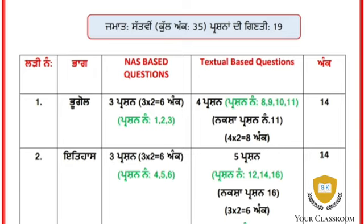Because the school is not open, you should note the paper pattern and structure. For Class 7, the total marks are 35, total questions are 19, and total marks of 25 will be on the paper.